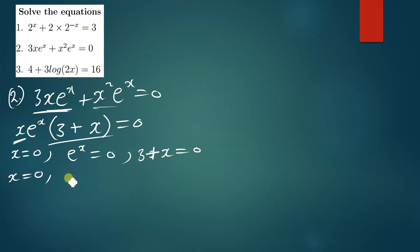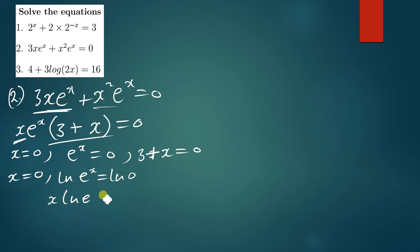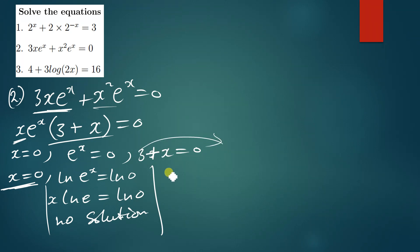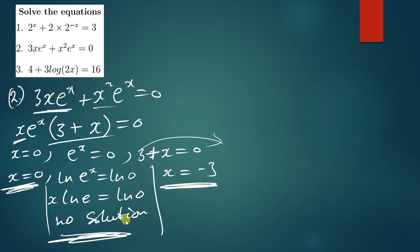Since everything is equated to zero, we can equate each factor to zero. From x equals zero, we get x equals 0. For e to the power x equals zero: introducing ln on both sides gives x ln e equals ln zero. But ln zero is undefined, so this part has no solution. From the bracket 3 plus x equals zero, we get x equals negative 3. So the two answers are x equals 0 and x equals negative 3.